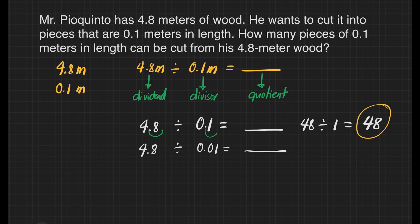So what if we will divide four and eight-tenths by one-hundredth? How many decimal places do we need to move in order for our divisor to be a whole number? It's going to be one and two. That's two decimal places.